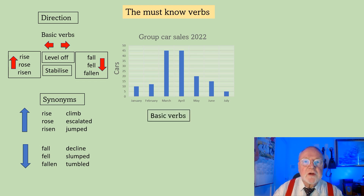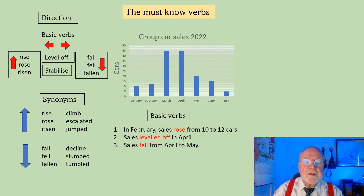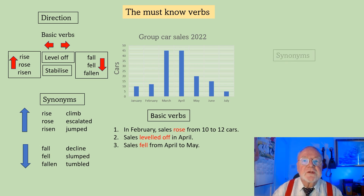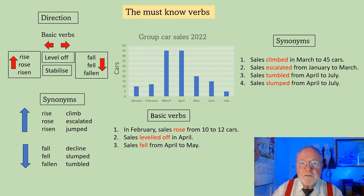Just using the basic verbs, this is what I could say. In February, sales rose from 10 to 12 cars — notice here I'm looking directly at the graph and taking information from it, which you should do when talking about a graph or answering an exam question. Sales leveled off in April. Sales fell from April to May. And using synonyms: sales climbed in March to 45 cars; sales escalated from January to March; sales tumbled and sales slumped from April to July.